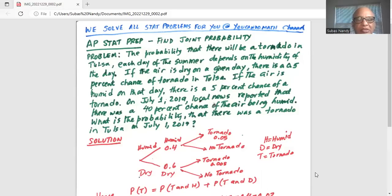On July 1, 2019, local news reported that there was a 40% chance of the air being humid. What is the probability that there was a tornado in Tulsa on July 1, 2019?